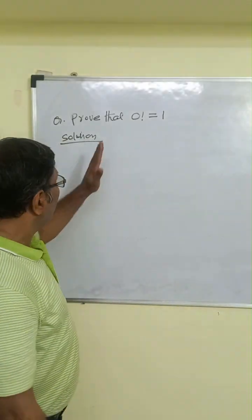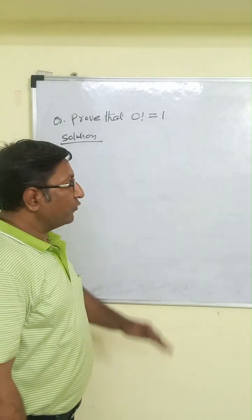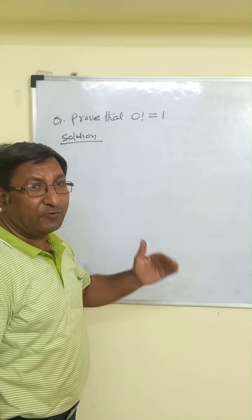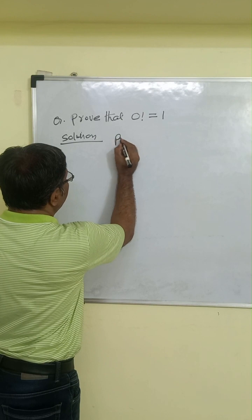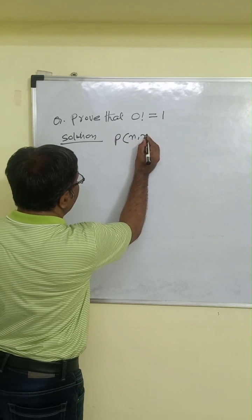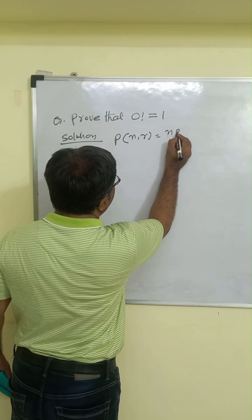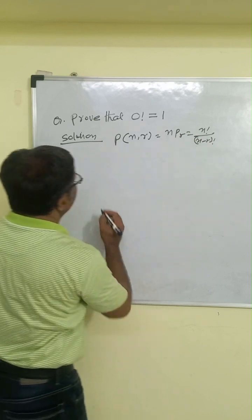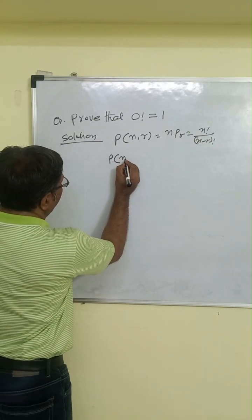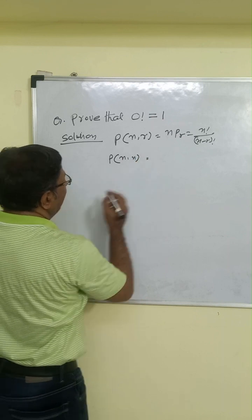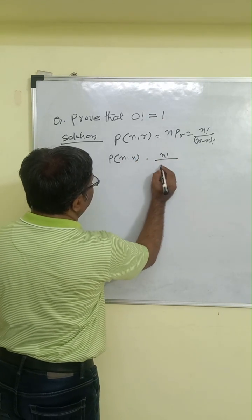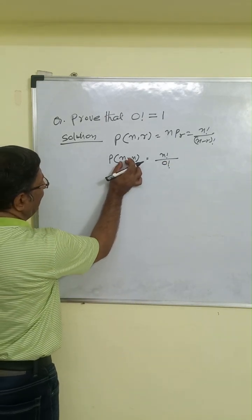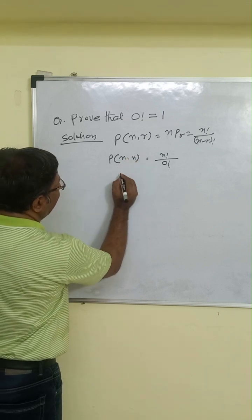Next question: prove that zero factorial equals one. We know the permutation formula nPr equals n factorial divided by (n minus r) factorial. We can write the permutation of n objects taken n at a time as nPn, which equals n factorial divided by (n minus n) factorial, that is n factorial divided by 0 factorial.